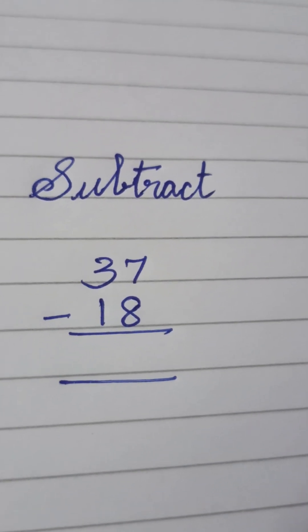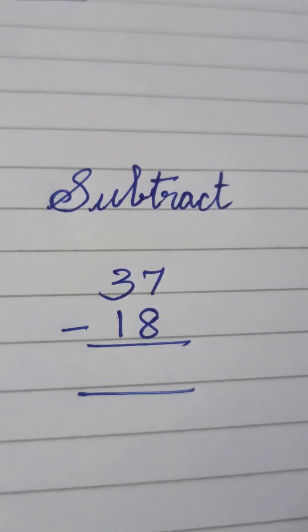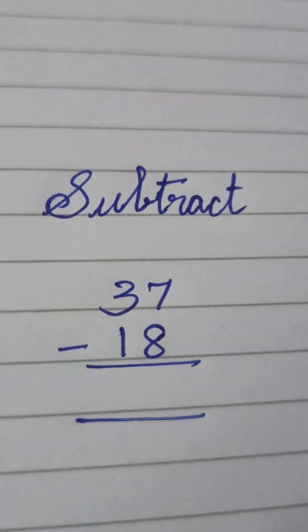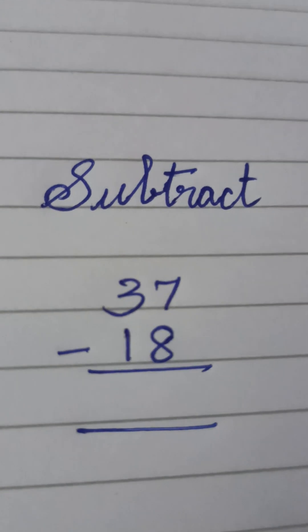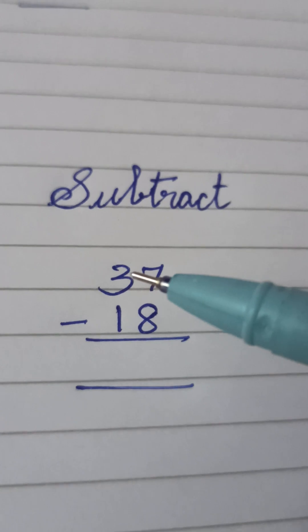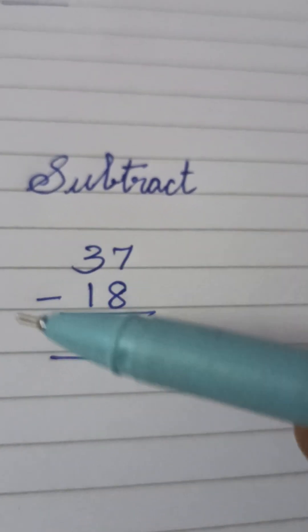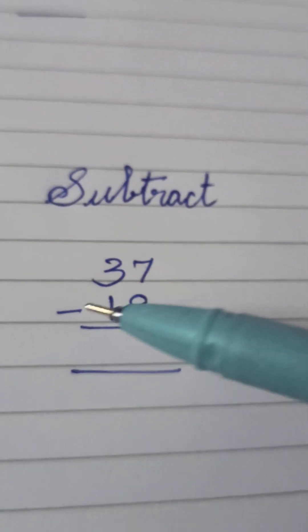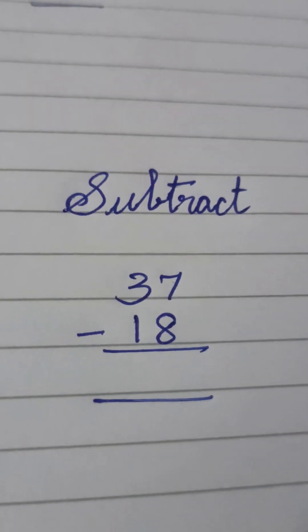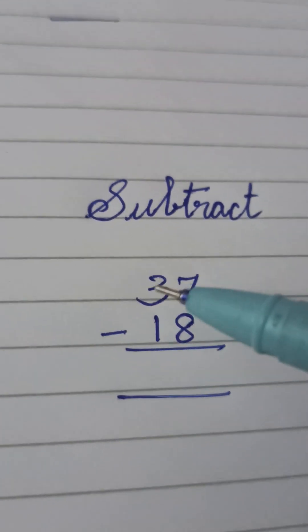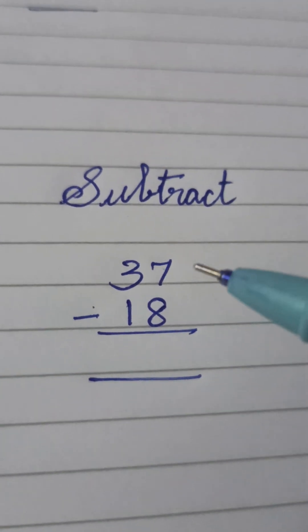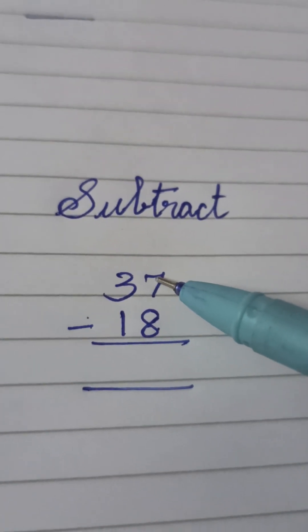Hello children, today we are going to see subtraction for two digit numbers. For example, I have taken 37 and 18. So we have to take away 18 from 37. How can we read this? 37 minus 18. This symbol is known as minus. For subtraction, we use this minus symbol and the meaning for it is to take away. We have to take away 18 from 37.